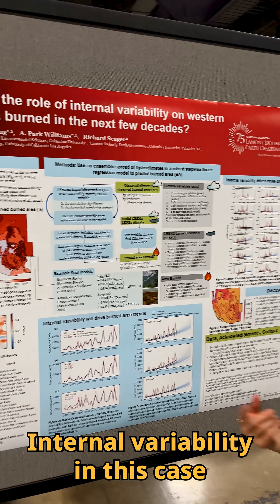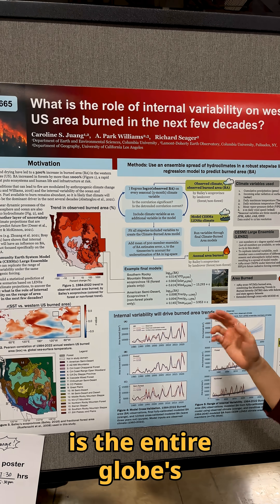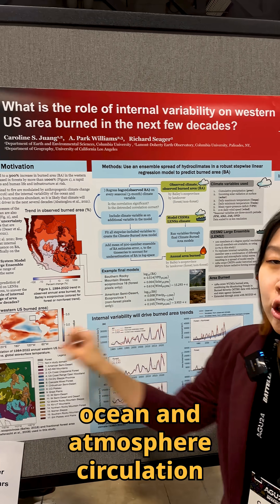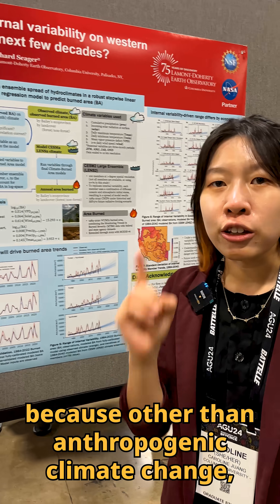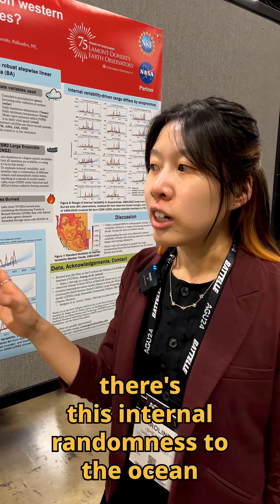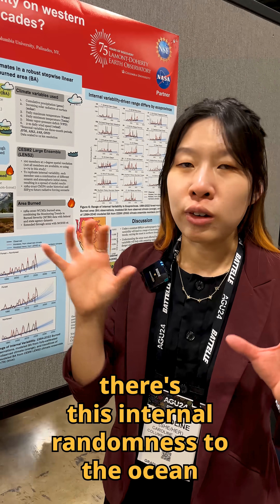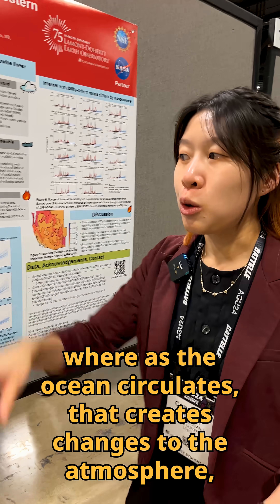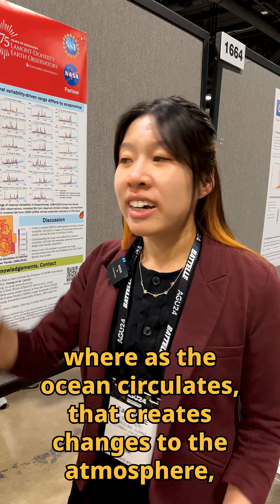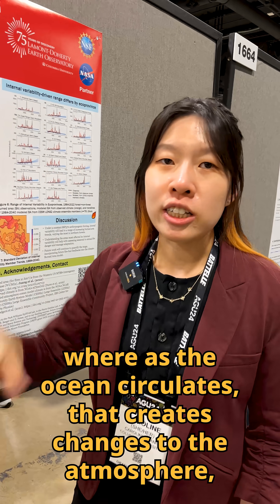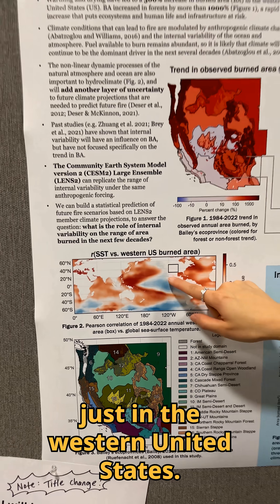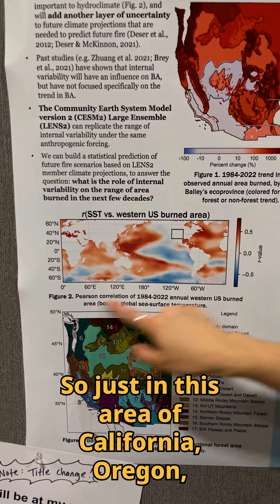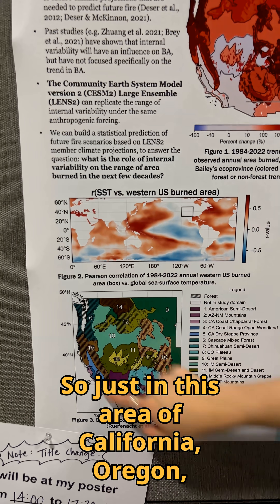Internal variability in this case is the entire globe's ocean and atmosphere circulation, because other than anthropogenic climate change, there's this internal randomness to the ocean — as the ocean circulates, that creates changes to the atmosphere that then are impacting what's going on just in the Western United States, so just in this area of California,